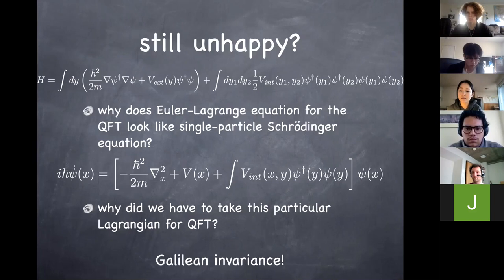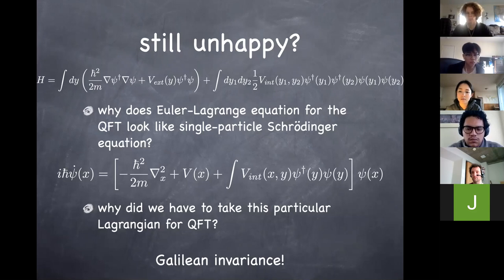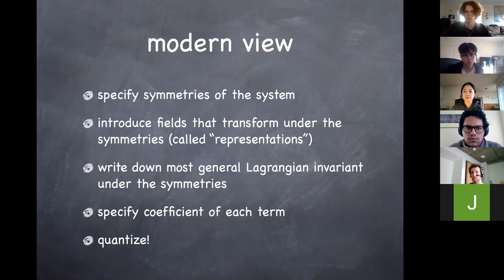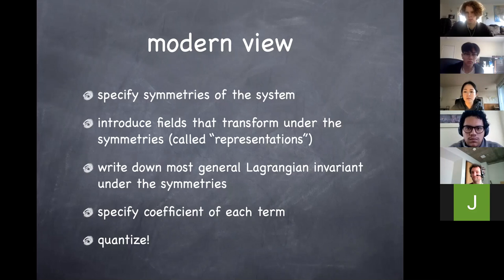The modern view of quantum field theory is that you first ask: what is the symmetry of the system? Once you have a symmetry, mathematically that gives you the concept of a group. Symmetry is always some transformation, like a rotation of space. In three-dimensional space you can rotate around the x-, y-, and z-axes, do rotations successively, and any rotation can be composed with others. This defines a product. You also have an inverse rotation and an identity — those are the axioms of group theory. Whenever you think about symmetries, you're always thinking about a group.